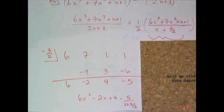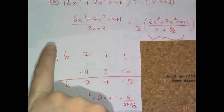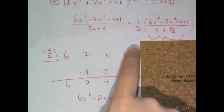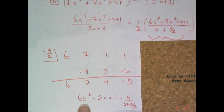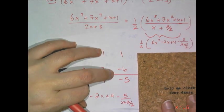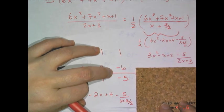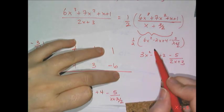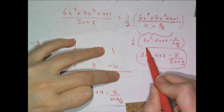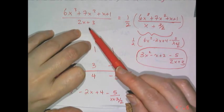So performing the synthetic division on 6x cubed divided by x plus 3 halves, I put the negative 3 halves there, the 6, the 7, the 1, and the 1. I use the algorithm and I get the answer 6x squared minus 2x plus 4 minus 5 over x plus 3 over 2. But that's not my answer, that's the answer to the thing inside the parentheses. What I have to do now is multiply it by a half and when I do that I get 3x squared minus x plus 2 minus 5 over 2x plus 3. That's how you want to alter the synthetic division algorithm to deal with a denominator that doesn't have a leading coefficient of 1.